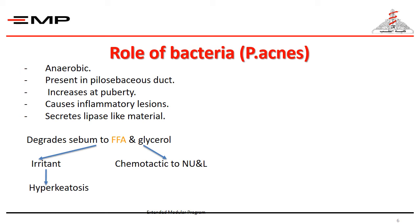Propionibacterium acnes are responsible for the inflammatory process of acne vulgaris — the papules, nodules, and pustules. They are anaerobic organisms that increase abruptly at puberty. They secrete many chemical mediators, the most important of which is lipase. Lipase is responsible for degradation of sebum triglycerides into free fatty acids and glycerol. Free fatty acids are irritant, adding to the problem of hyperkeratosis along the hair shaft.